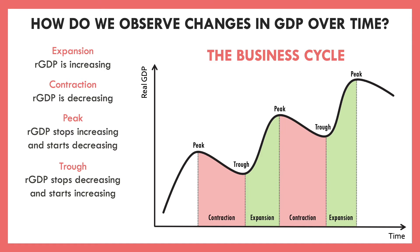We've seen this even recently. With the COVID pandemic, our economy was doing really well in early 2020. However, whenever the pandemic hit, we started to see a decrease in our GDP — we had hit some peak and were falling into a contraction, our economy was shrinking. Since then, the United States economy hit a trough, a bottom point, where it turned and started going into a period of expansion again. This is just that natural up and down of our GDP.